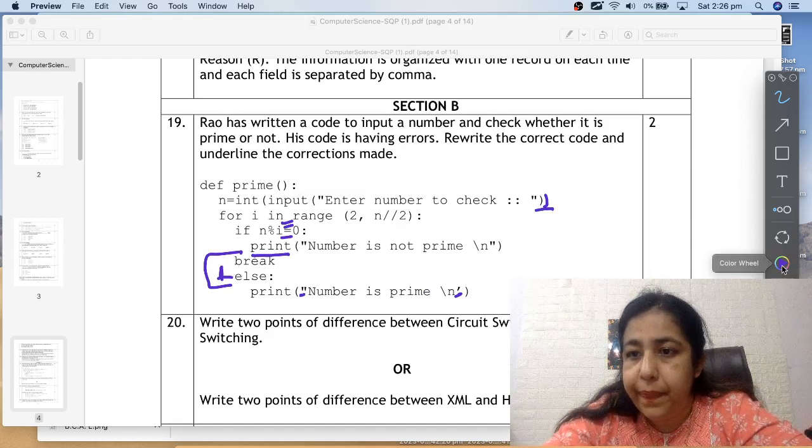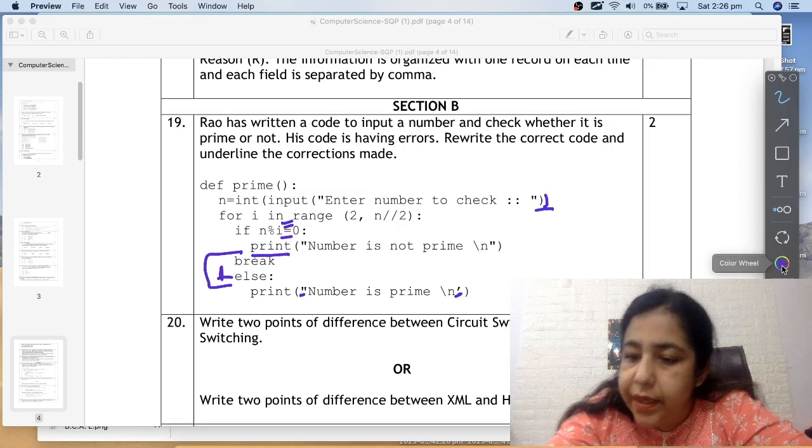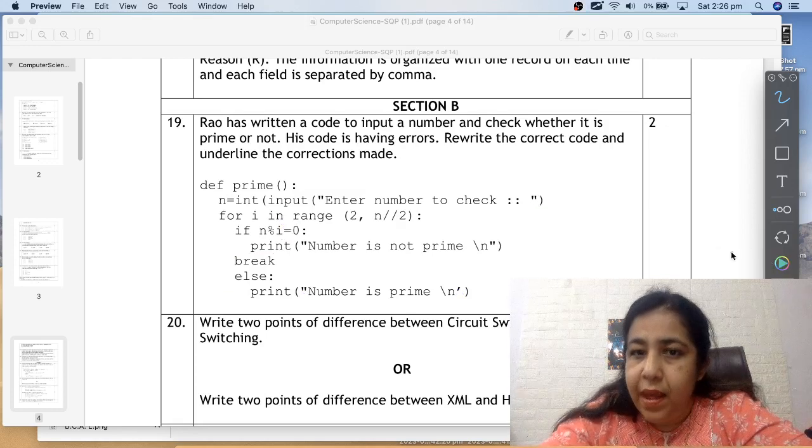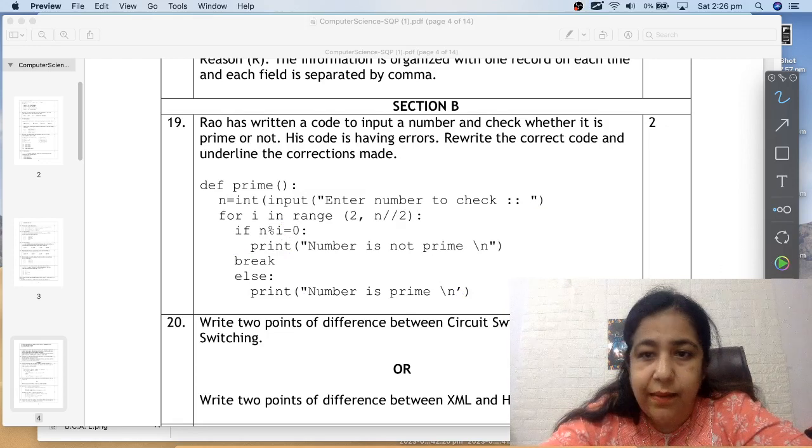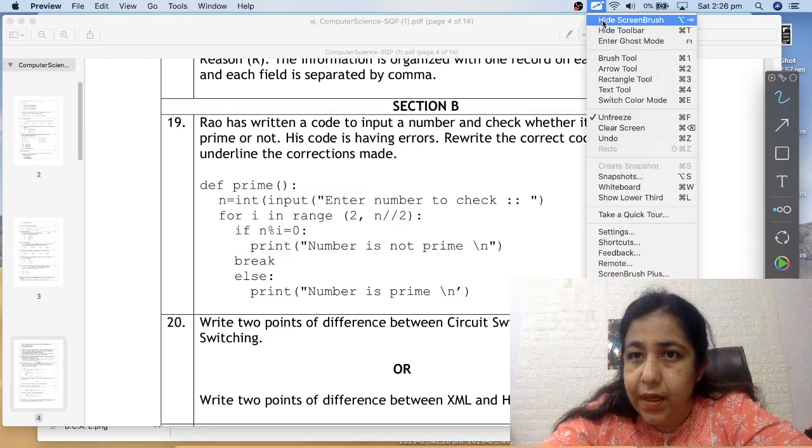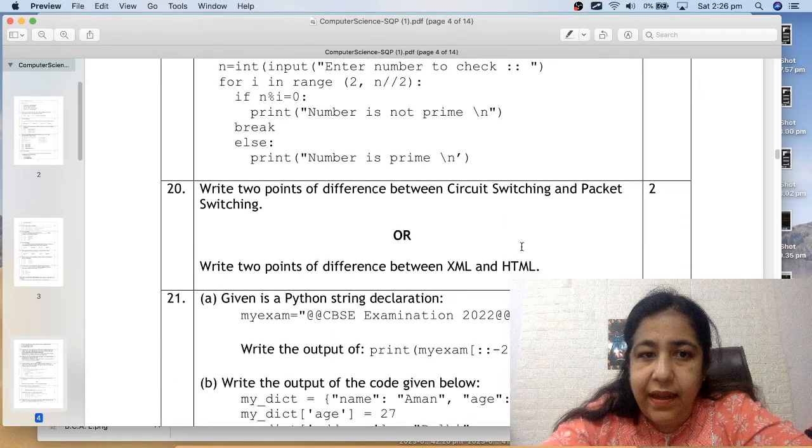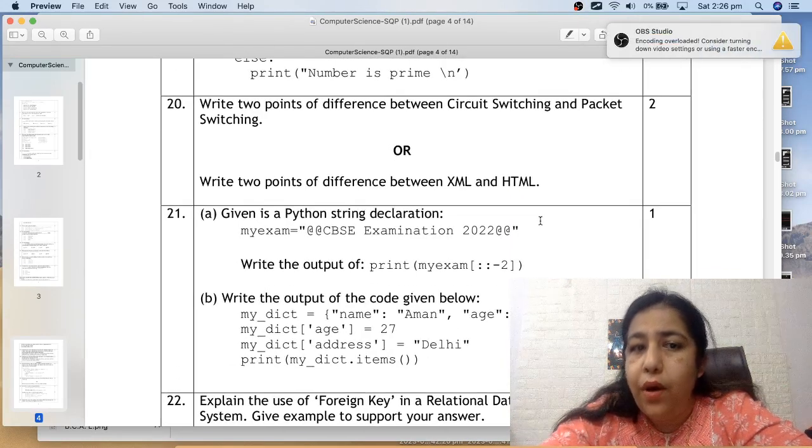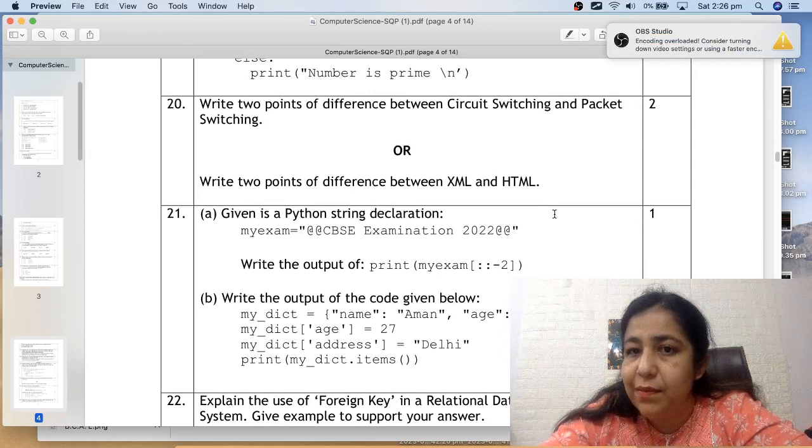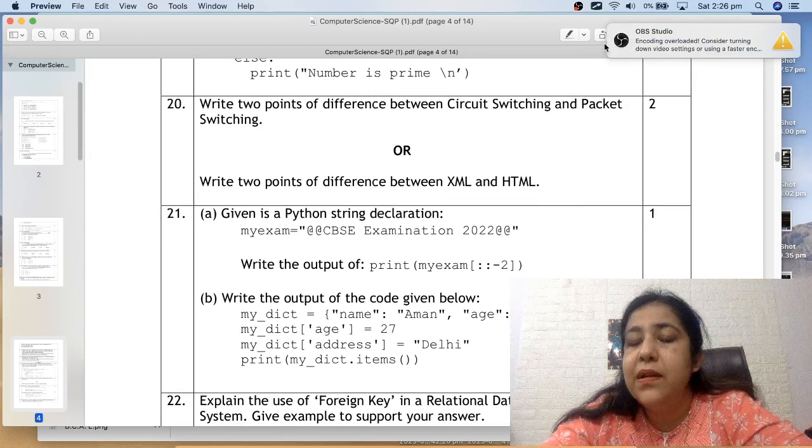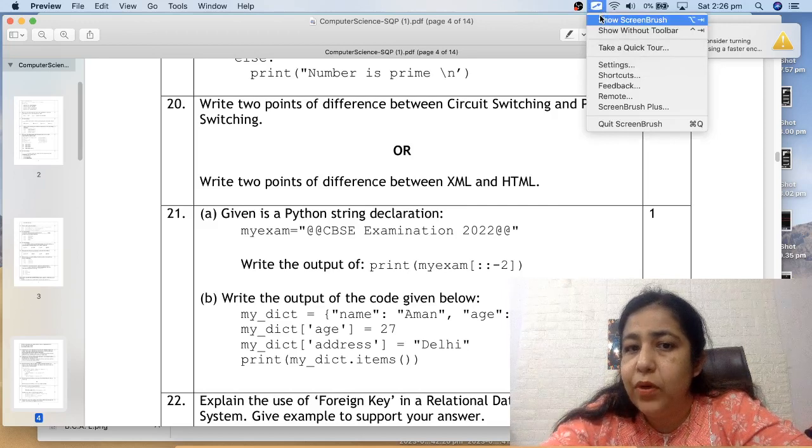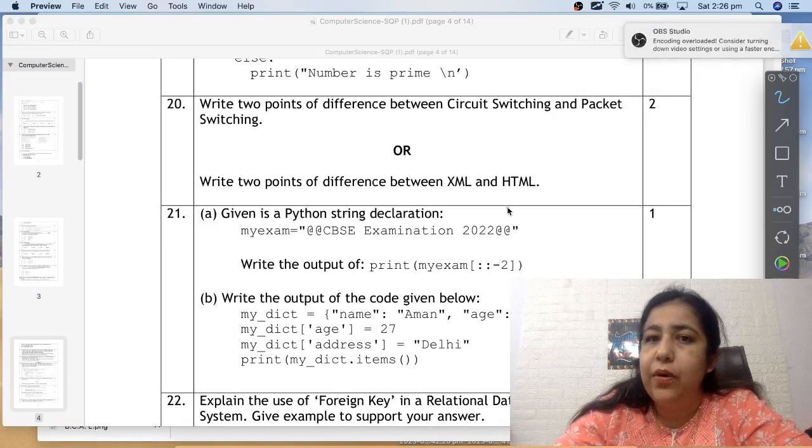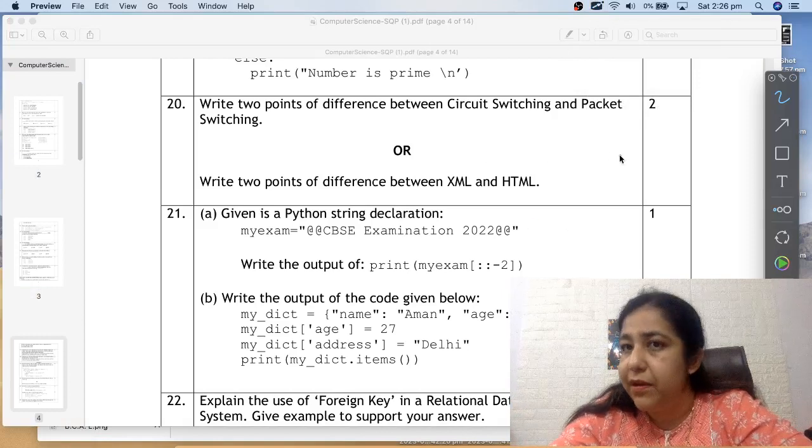So this is an indentation error. Indentation error means that the two lines are prior to it, and that is your third error. The fourth error is that the quotes here are double and here single. It cannot happen either. Either two single quotes or double quotes. So we cannot put single and double quotes. That is one thing. Now let's move on to question number 20.